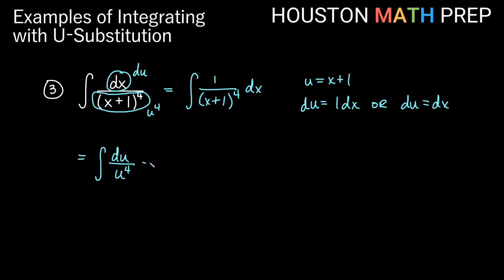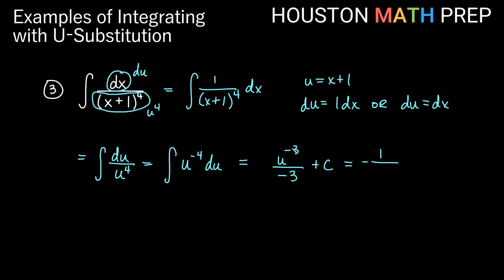We can use the power rule here. The power goes up by one, so we get u to the negative three, then divide by the new power, negative three, plus C. Writing this differently: negative one third times u to the negative three means we have one over three u cubed. Now substituting back in terms of x, our u was x plus one, so the final answer is negative one over three times the quantity x plus one all cubed plus C.